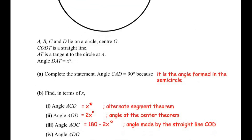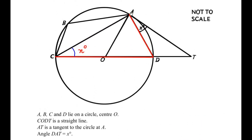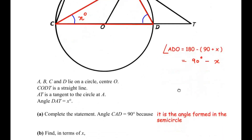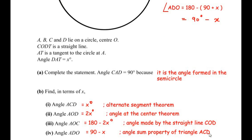Now let us find angle ADO. We can extend this to angle ADC because COD is a straight line. Considering triangle ACD, from the first part angle CAD is 90 degrees. Using the angle sum property of triangle ACD, angle ADO equals 180 degrees minus (90 degrees plus x), which expands to 180 minus 90 minus x, giving us 90 minus x degrees.